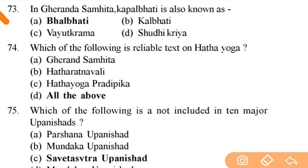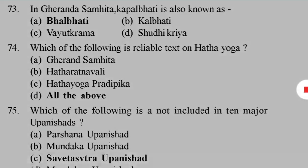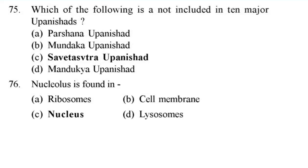In Gherand Samhita, Kapalabhati is also known as — right answer is A — Bhal Bhati — important question. Next: which of the following is a reliable text on Hatha Yoga? Right answer is D — all of the above: Gherand Samhita, Hatha Ratnavali, and Hatha Yoga Pradipika. Next: which of the following is not included in the ten major Upanishads? Right answer is C — Shvetashvatara Upanishad.